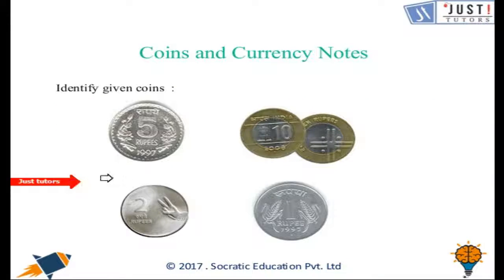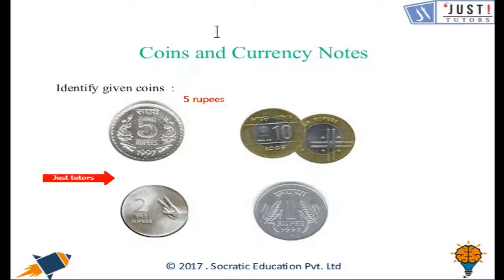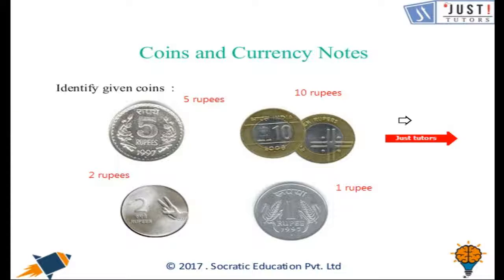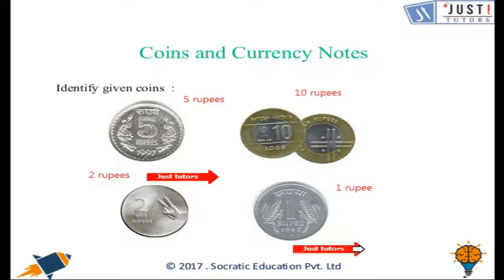Now you have some coins here — try to identify these coins. As we can see, 5 is written on it, so this is a 5 rupees coin. In a similar way we can find the worth of every coin: this is a 10 rupees coin, that's a 2 rupees coin, and this is a 1 rupee coin.